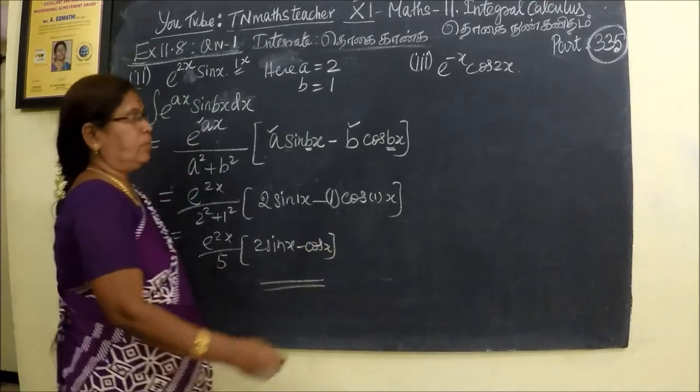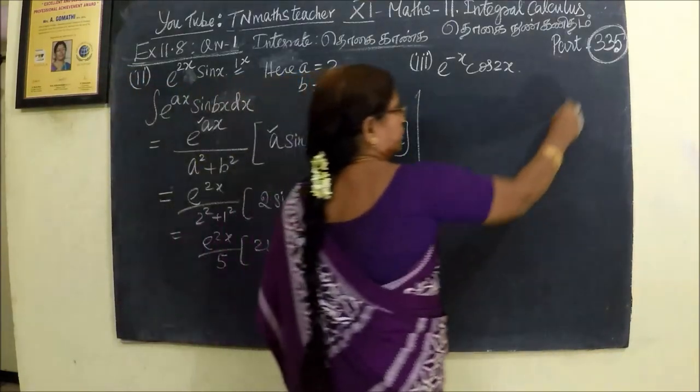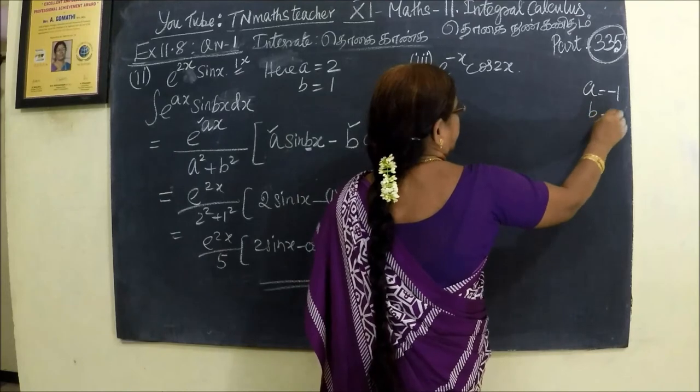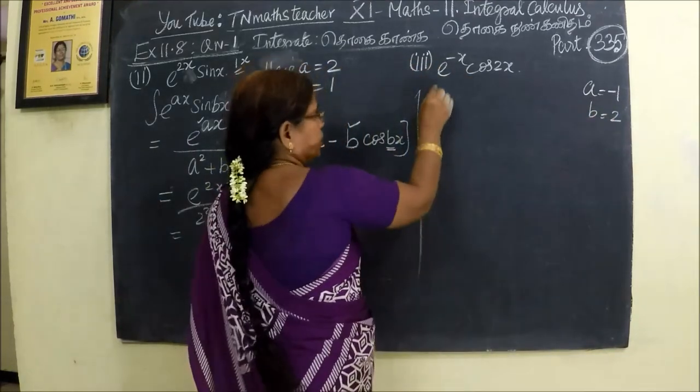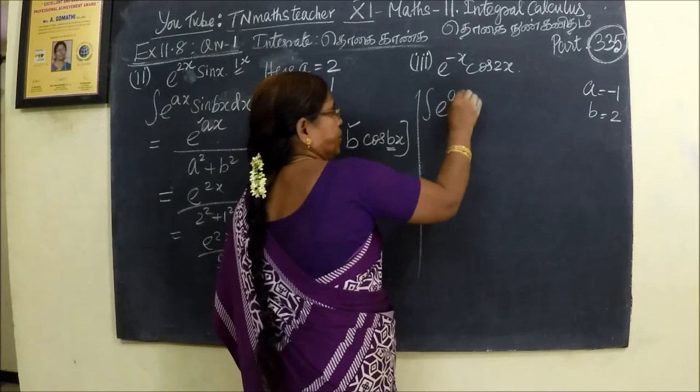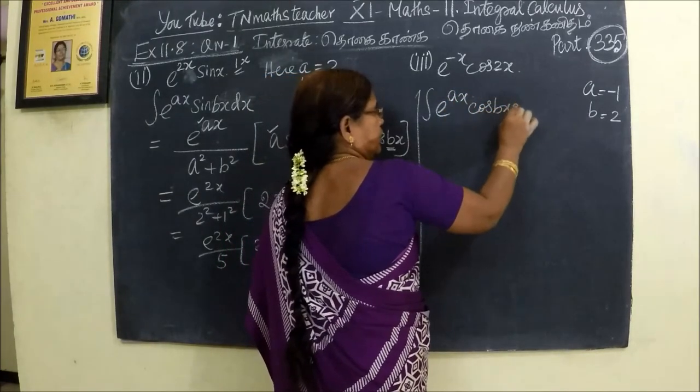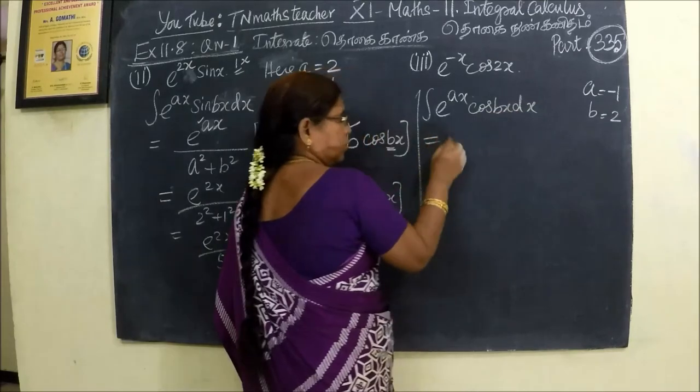Then next one. e power minus 1, then b equals 2. This is cos, cos integral. E power ax, then cos bx dx. This is equal to...